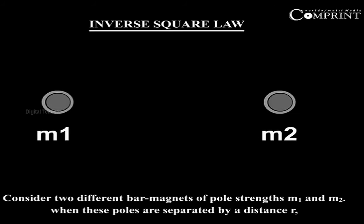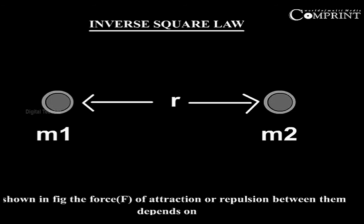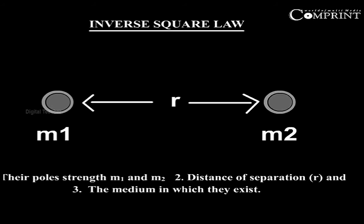Inverse square law. Consider two different bar magnets of pole strengths M1 and M2. When these poles are separated by a distance R, as shown in the figure, the force of attraction or repulsion between them depends on the pole strengths M1 and M2, and the distance of separation R,